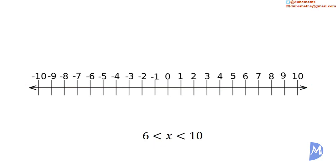The compound inequality x is greater than 6 but less than 10 means that x can have any value that is both less than 10 and greater than 6. The red line shows the range of values that x can have. The empty circles show that 6 and 10 are not included.